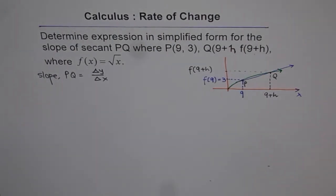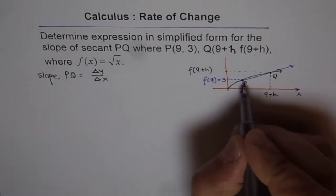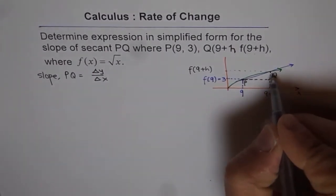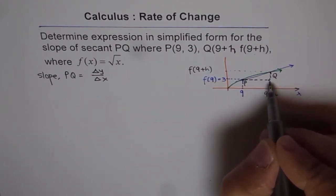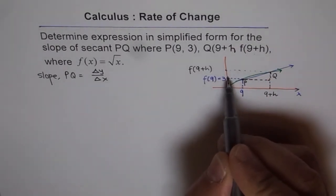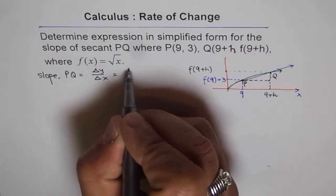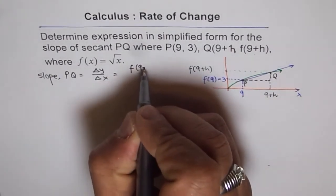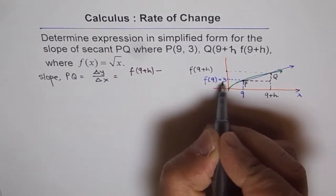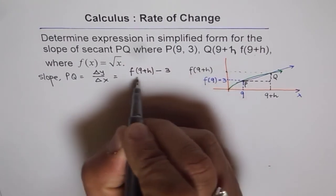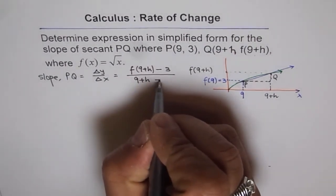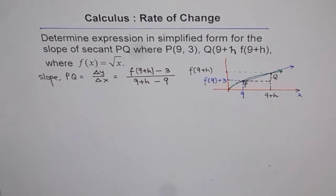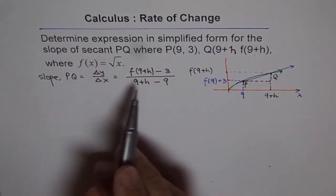Now what is rise and run in this particular case? Let's draw a triangle. The change in x goes from 9 to 9+h, and the change in y is the difference in the two y-values. So change in y is f(9+h) − f(9), which is f(9+h) − 3, divided by the change in x, which is 9+h − 9.